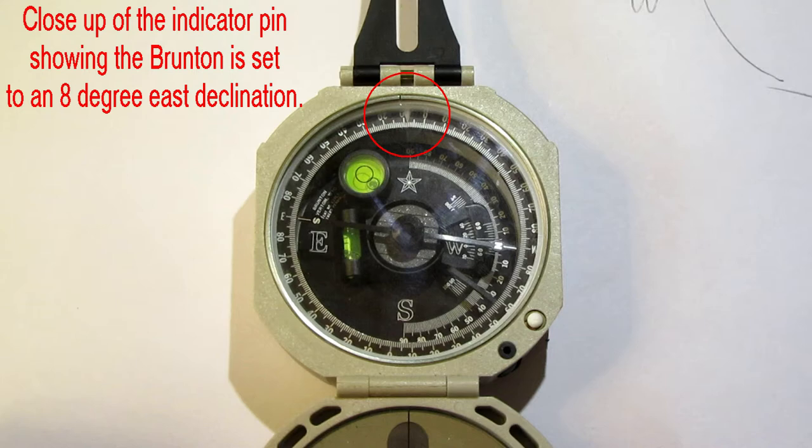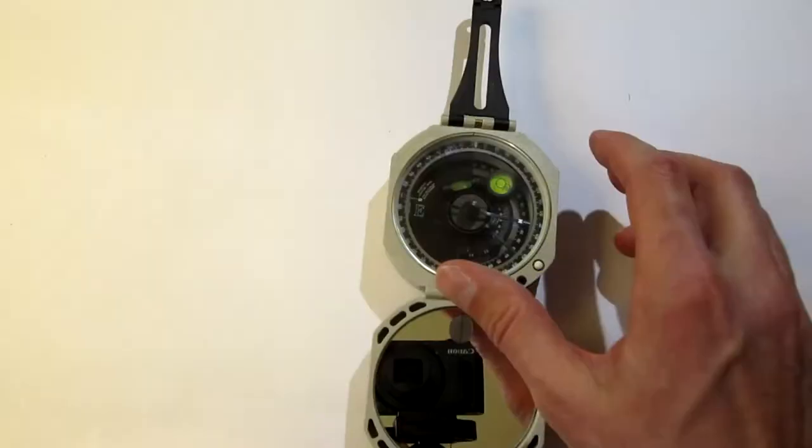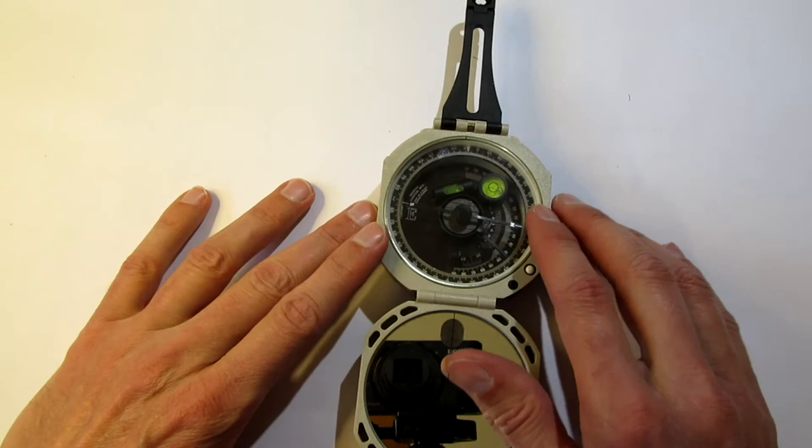Of course, declination, or the correction between geographic north and magnetic north, is going to vary depending on your location on the surface. This map is available on Wikipedia, but was originally produced by NOAA. Green lines indicate 0 declination, or 0 correction needed between magnetic north and geographic north. Red lines indicate an eastern correction, and blue lines indicate a western correction. Anytime you begin to do fieldwork, you need to make sure your declination is correctly set for your Brunton.